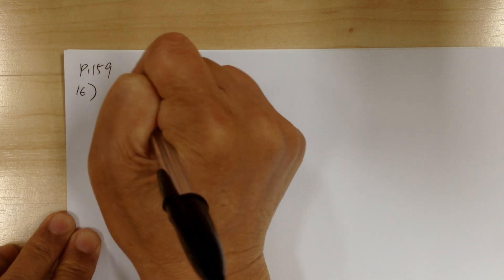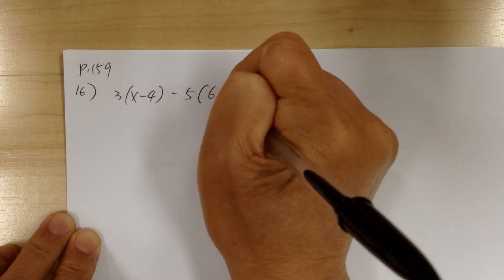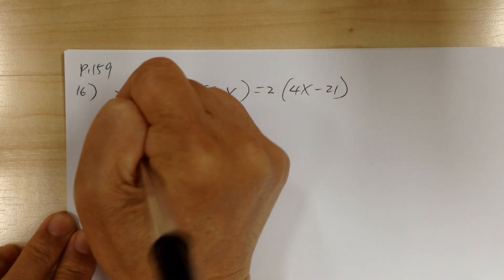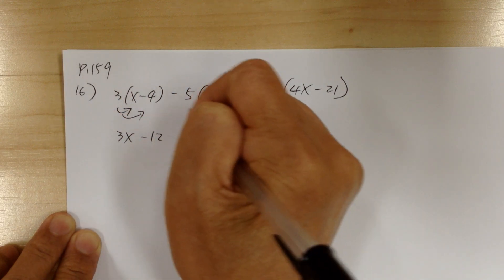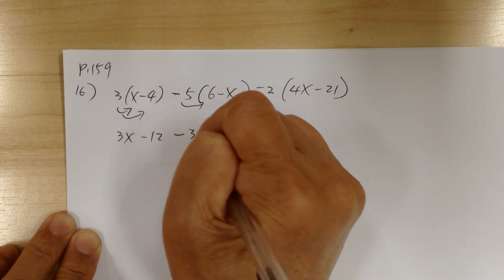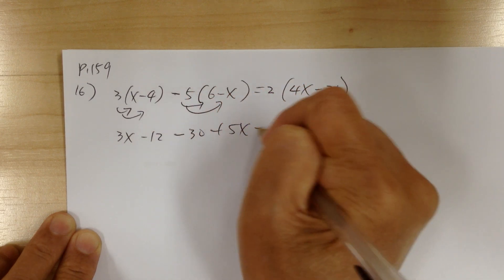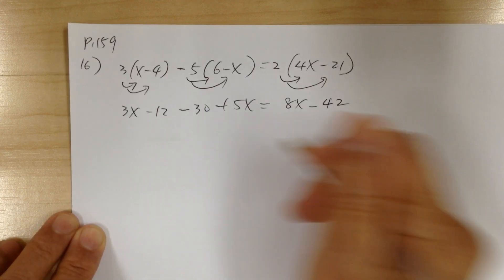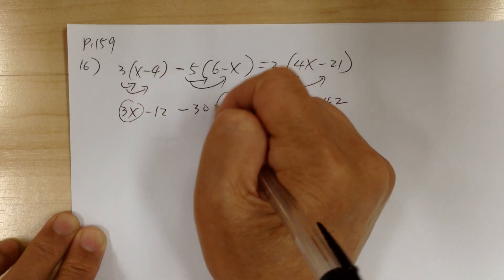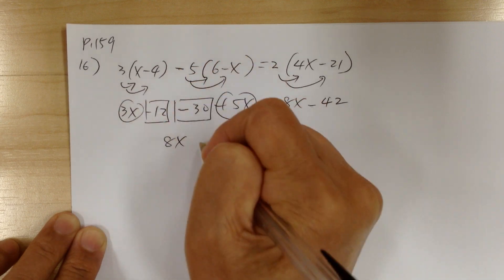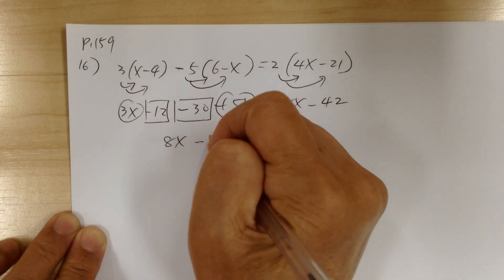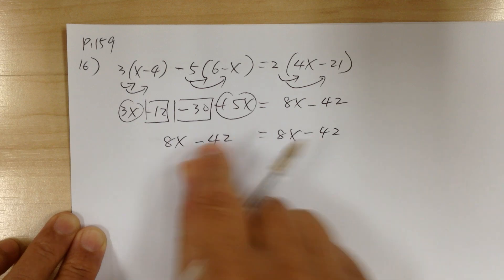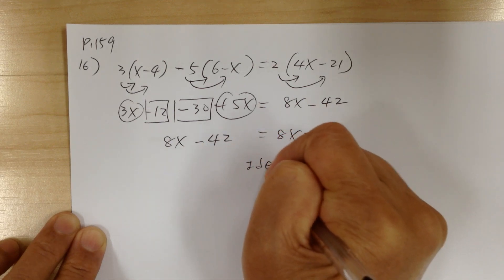You have 3 times (x minus 4) minus 5 times (6 minus x) equal to 2 times (4x minus 21). Distribute: you get 3x minus 12, then minus 30 plus 5x equal to 8x minus 42. Combine like terms: 8x minus 42 equal to 8x minus 42. You can see they're identical — exactly the same — so right away you know this is identity. For identity, the two sides have to be exactly the same.